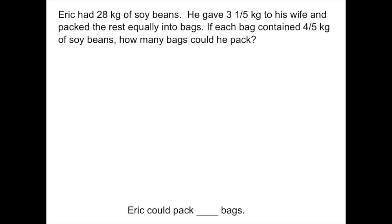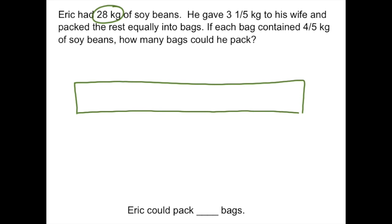All right, and we're on to problem 1D. It says Eric had 28 kilograms of soybeans. He gave three and one-fifth kilograms to his wife and packed the rest equally into bags. If each bag contained four-fifths kilograms of soybeans, how many bags could he pack? My sentence says Eric could pack blank bags. We're told that Eric had 28 kilograms of soybeans — that's what he started with — so I can go ahead and draw my whole bar labeled 28 kilograms.